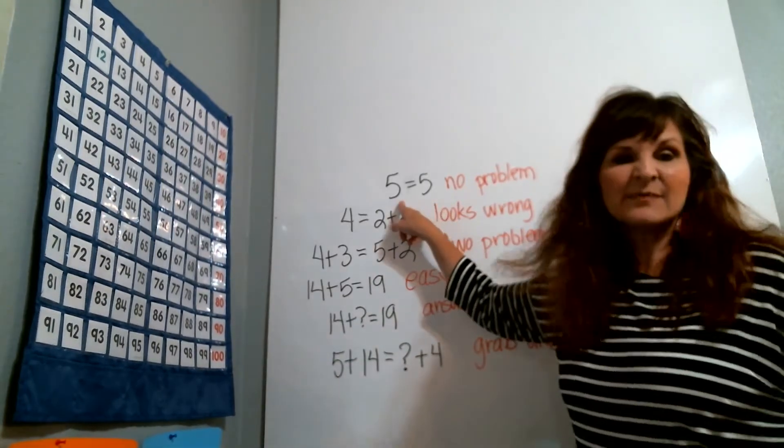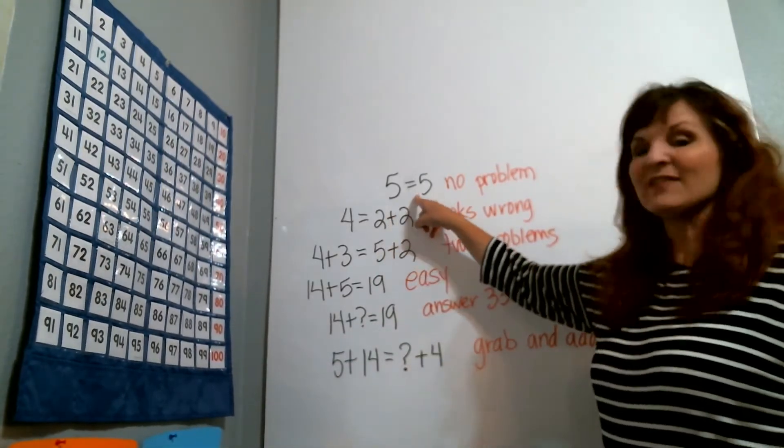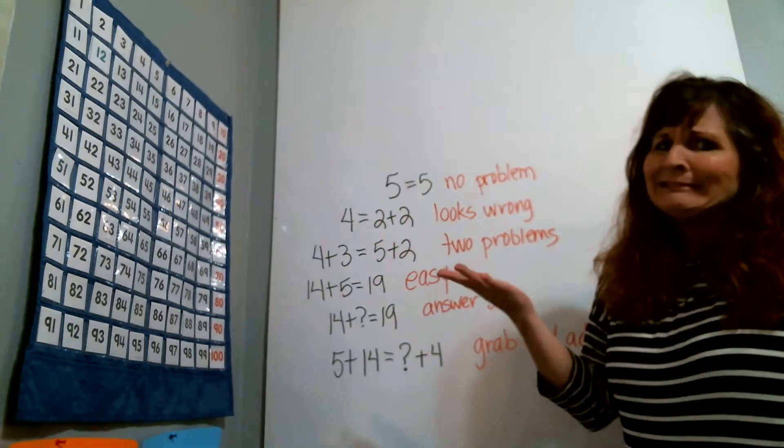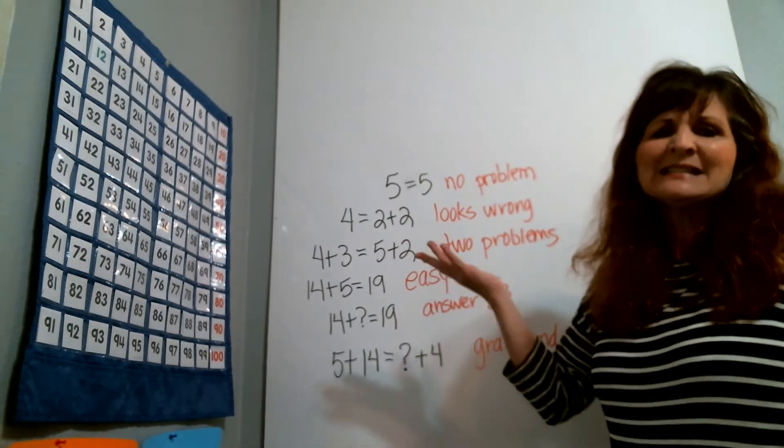So first of all, when kids see something like an expression like this, it says 5 equals 5, they say there's not a problem there. That doesn't mean anything.